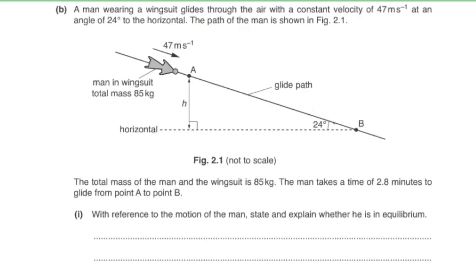Part b: a man wearing a wingsuit glides through the air with a constant velocity of 47 m/s at an angle of 24 degrees to the horizontal, as shown in figure 2.1. The total mass of the man and wingsuit is 85 kilograms. The man takes 2.8 minutes to glide from point A to point B.